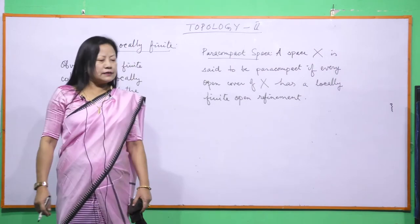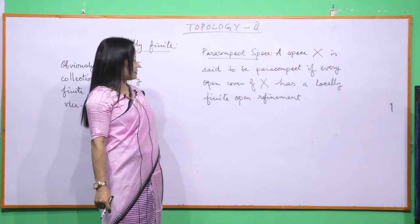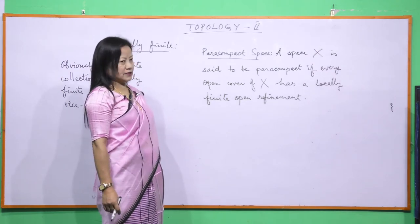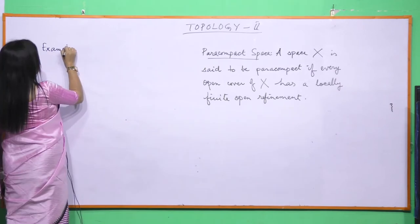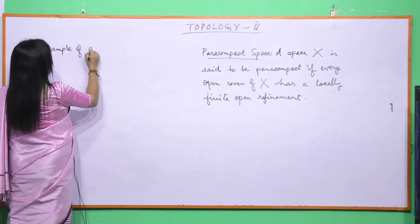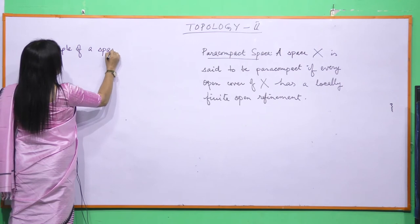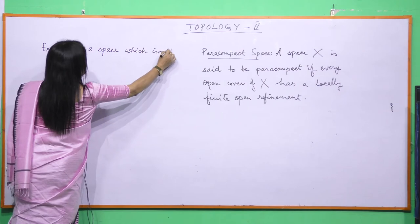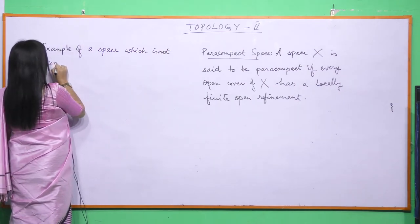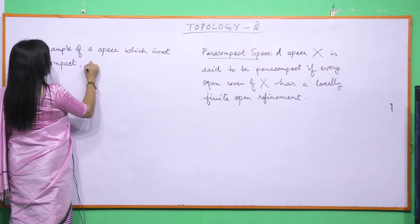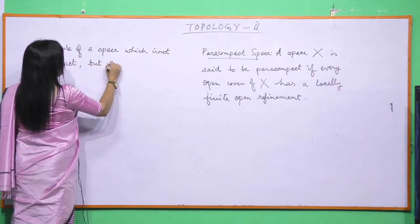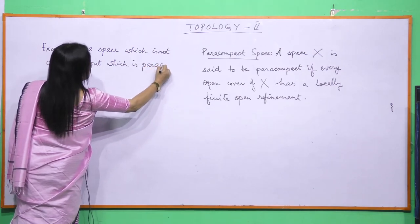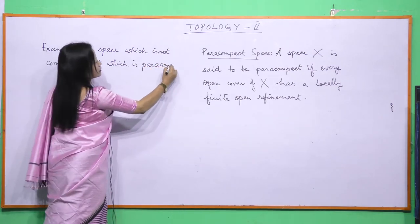Today we can consider the example of a space which is not compact but which is a paracompact space. Let us consider an example of a space which is not compact but which is paracompact.